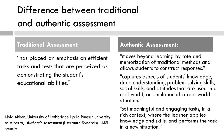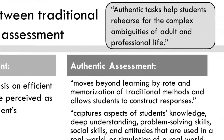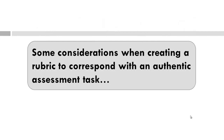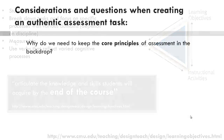To recap, pause the video and take a look at some of the differences between authentic and traditional assessment. In a nutshell, tasks that are authentic in nature help students rehearse for the complex ambiguities within a particular context. There is no one best way to create a rubric. Consider the previous videos and pause to jot down some key elements that one would consider when creating a rubric. We go back to the learning objectives and the relationship between assessment and instructional activities — core principles of assessment.